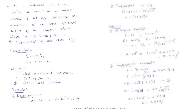Next, for the trapezoidal channel, we apply the area condition: A = (b + nd) × d. The area is still 8 m² since discharge and velocity are the same. Substituting n = 1/√3, we get 8 = (b + (1/√3)y) × y. Here both b and y are unknown, so we need another equation.